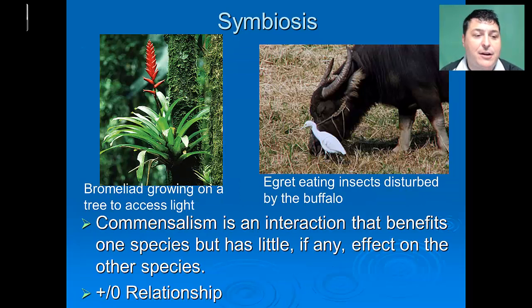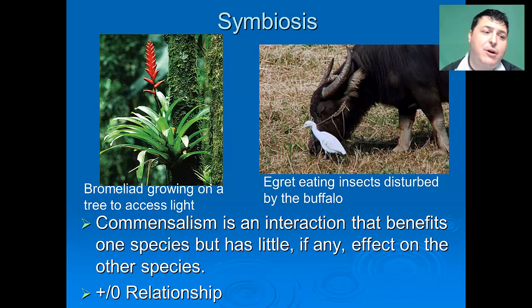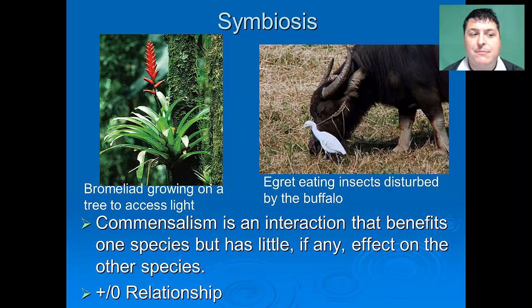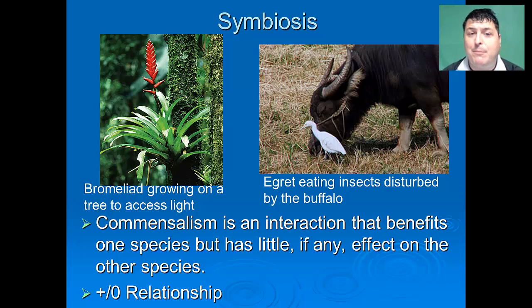Lastly, we have the commensalistic relationship, a form of symbiosis in which one species benefits and the other has little, if any, effect — a plus-zero relationship. A good example would be in the rainforest, where the thick canopy prevents a lot of things from growing on the floor. Bromeliads are a type of flowering plant that grow in the pockets of other trees. They don't hurt the tree they're growing on, but they benefit by getting off the forest floor and accessing light. Another commensalistic relationship is an egret and a buffalo — the egret follows the buffalo, eating the bugs it scares out. The buffalo doesn't really care that the egret is there, but the egret benefits from more easily finding food.